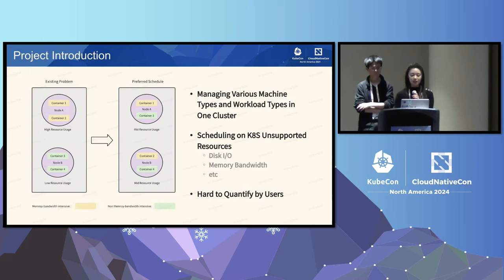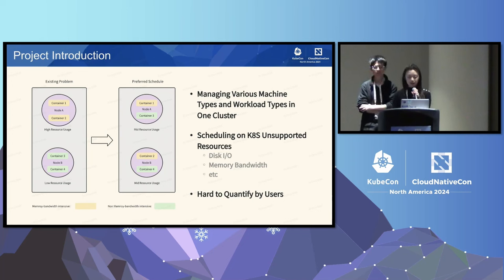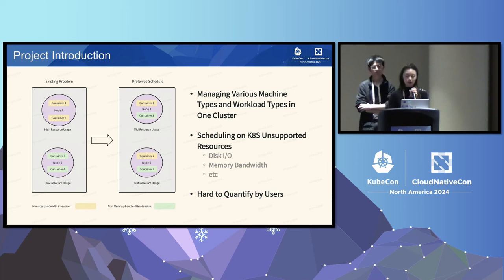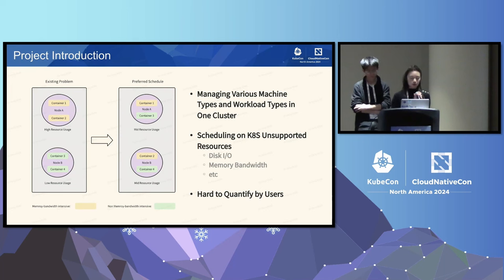First is the project introduction. In ByteDance, there are various machine types and workload types in one cluster that we need to manage. We have machines from different vendors or brands and different generations in one cluster. We also have different kinds of services running in one cluster, like online services, workload, model training, and streaming, etc. Ideally, those workloads consuming different types of resources should distribute evenly according to all nodes' capacity.